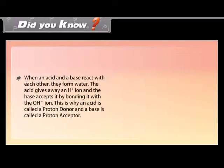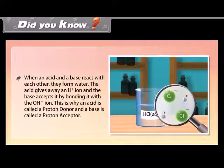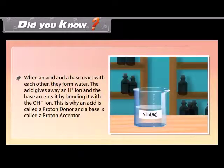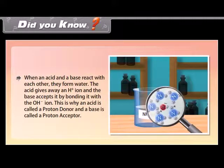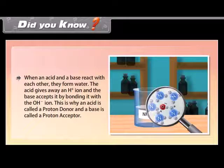When an acid and a base react with each other, they form water. The acid gives away an H+ ion and the base accepts it by bonding it with the OH- ion. This is why an acid is called a proton donor and a base is called a proton acceptor.